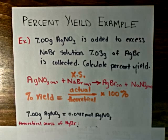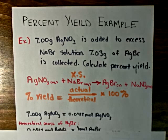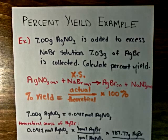So now we can do our calculation for the theoretical mass of silver bromide. And that will just be equal to our 0.041 moles of the limiting reagent times the molar ratio.